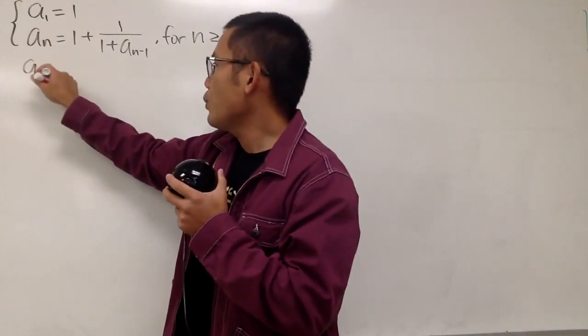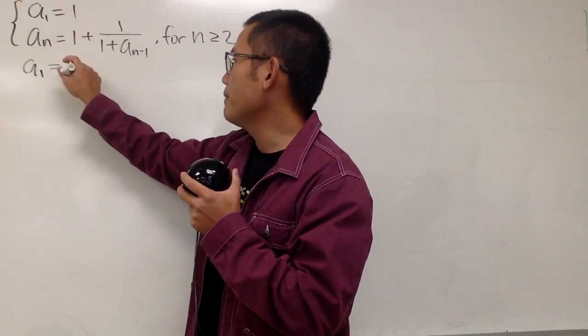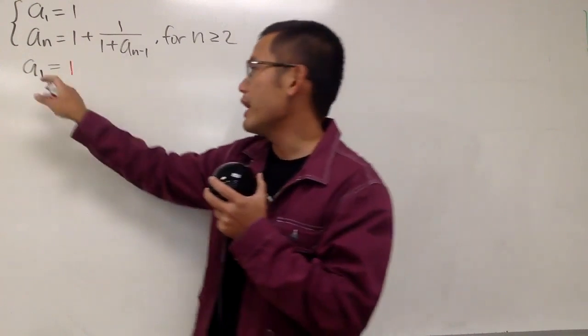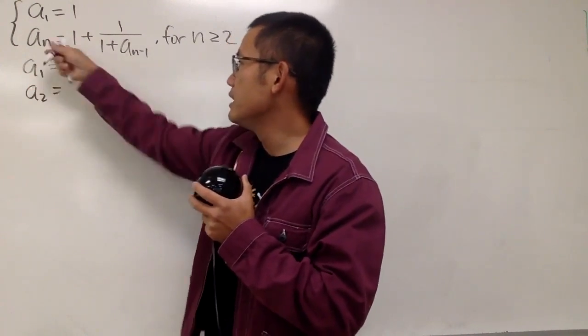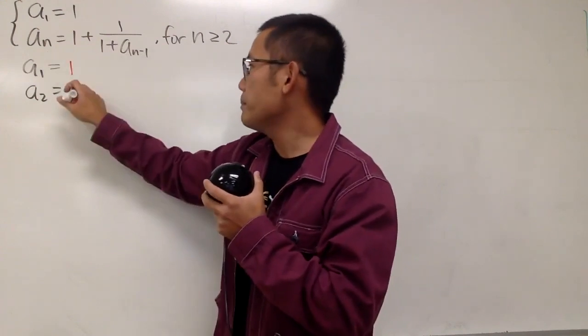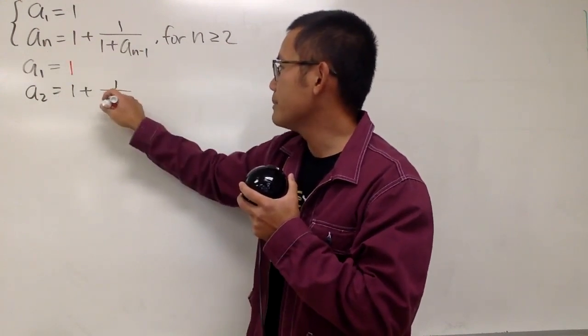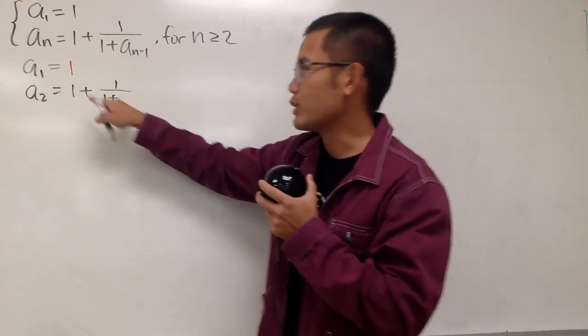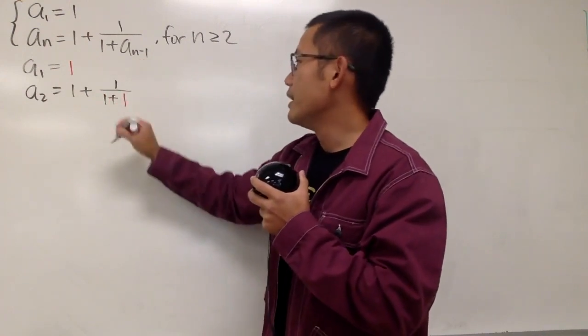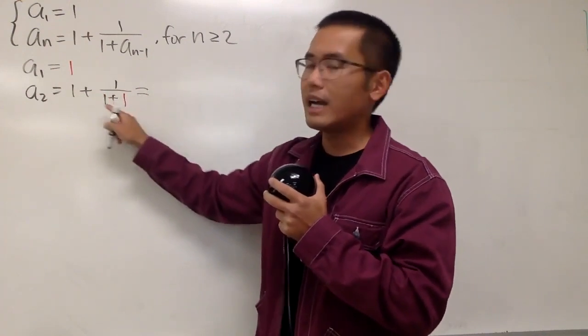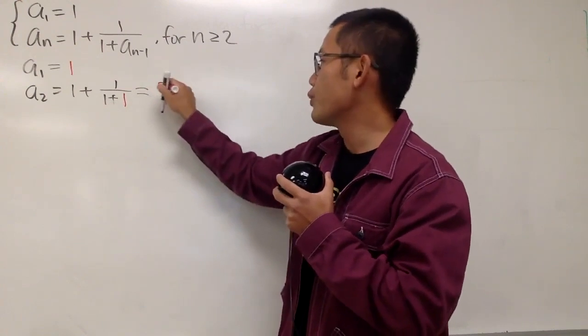So here we go. Let's say a₁ is right here, it's given to be 1, so that's what we have. Now, to get a₂, we will have to utilize this formula, which says 1 plus 1 over 1 plus the previous term. So we have to look here, which is this 1. And now we can just add this up, this is 1/2 plus 1, which is going to be 3/2, right here.